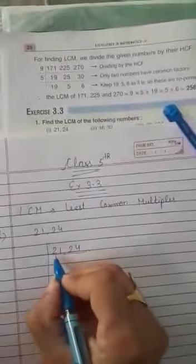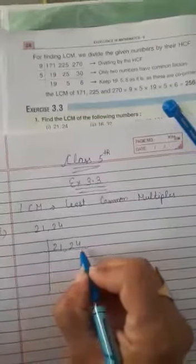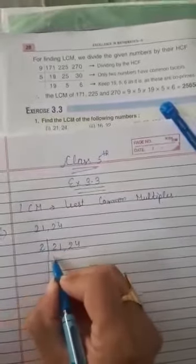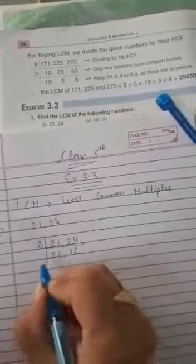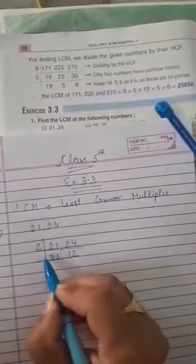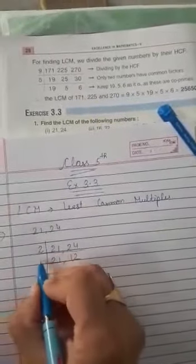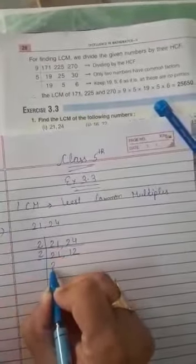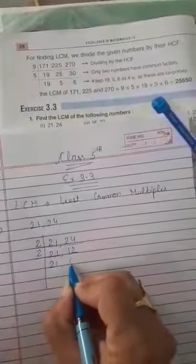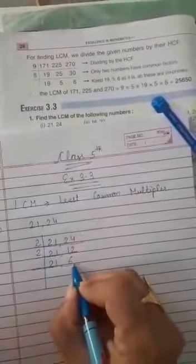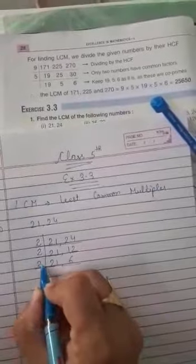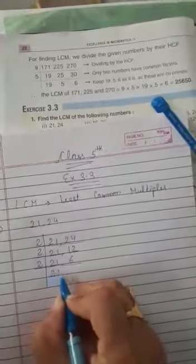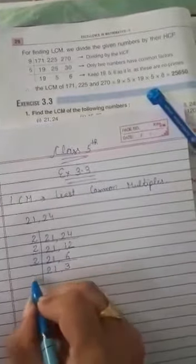2 table, 21 not visible but 24 visible. Then 21 write as it is, 2 ones are 2, 2 twos are 4. Next, 12 again visible in 2 table but 21 not visible. Then 2, 21 write as it is, 2, 6 are 12. Next, 6 also visible in 2 table. Then 21 not visible, write as it is, 2, 3 is 6.